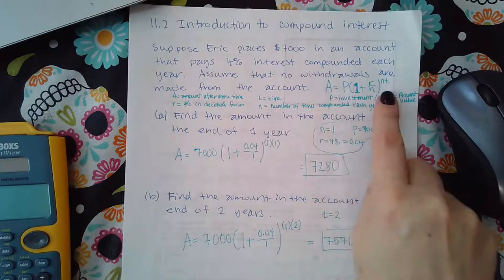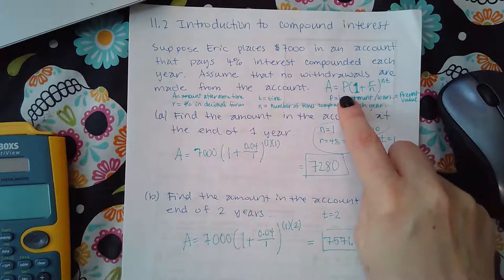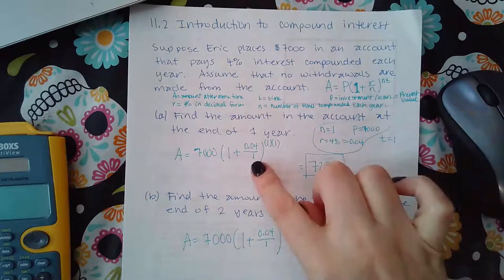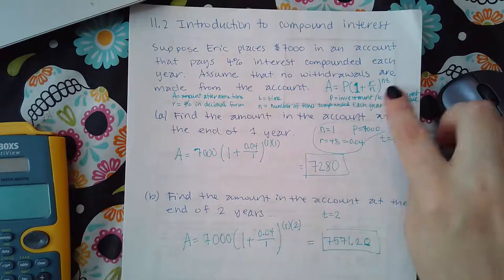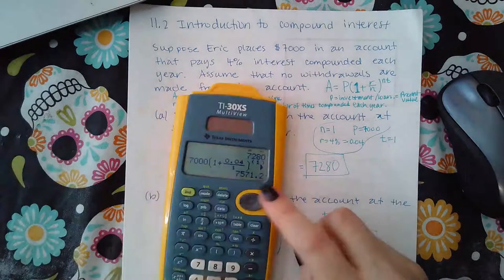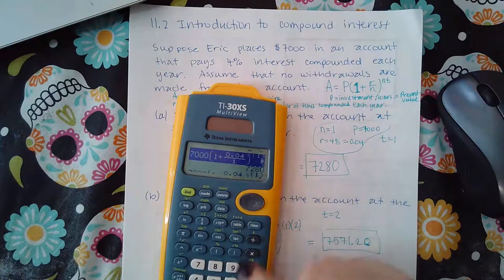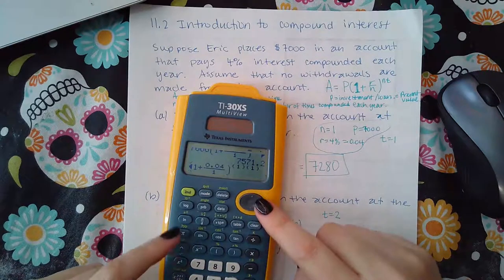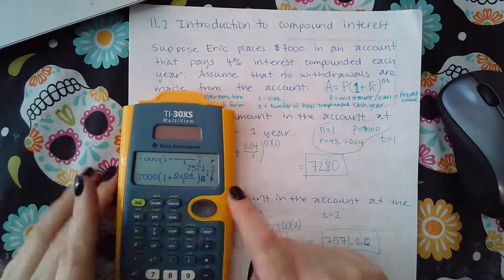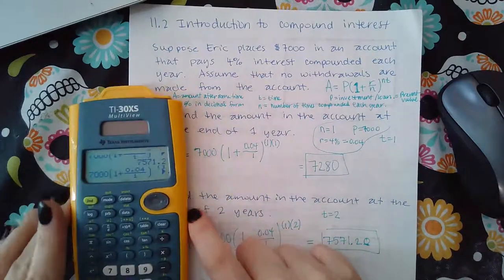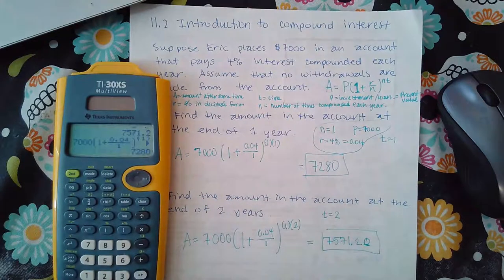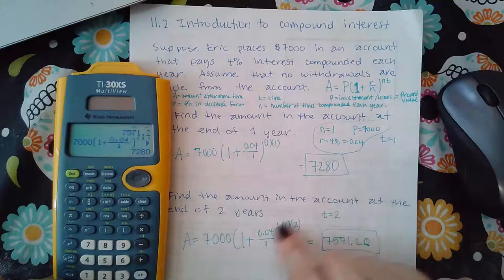So I took this formula and I plugged everything in. I plugged in 7,000 for P, that's just the number one, 0.04 for R, one for n, one for n again, and then one for T. Type this whole thing in my calculator, and I'll show you up here. But it's the whole thing. See the one in one exponent? And then everything else is exactly the way it is on my paper. So when I did that, I hit enter and it told me 7280. Now, the second part says find the amount in the account at the end of two years.